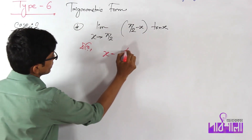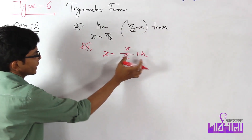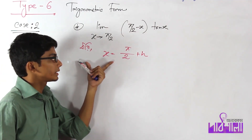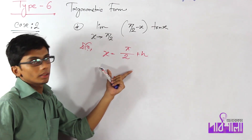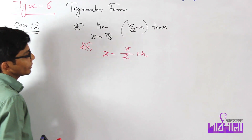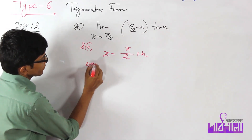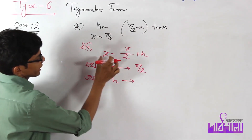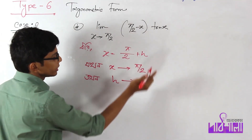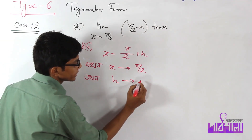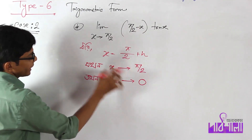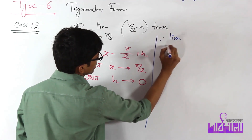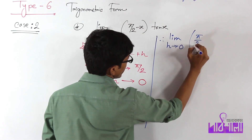You can see the limit of x tends to π/2 plus h. If you have a limit of x tends to π/2 plus h, then as x tends to π/2, π/2 minus x tends to 0.